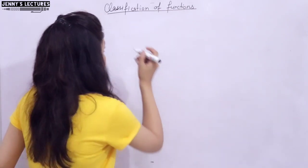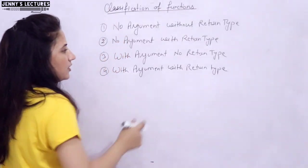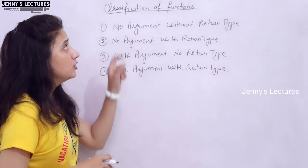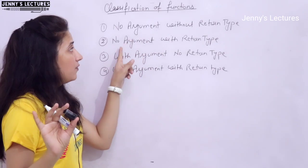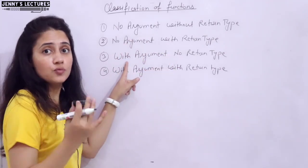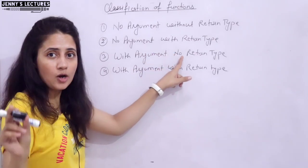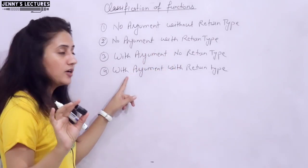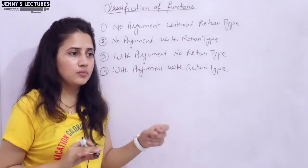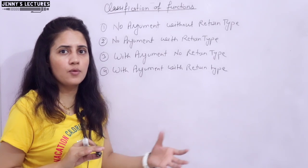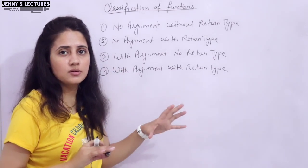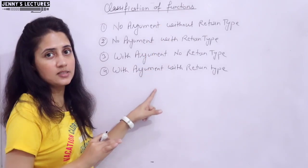Let me write down those categories first. A function can be categorized into four categories: a function with no argument and no return type; a function with no argument but with return type; a function with argument but no return type; and a function with argument and with return type. Any function you declare — in C, Java, or any programming language — must fall under one of these categories.